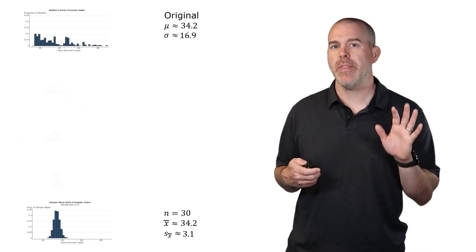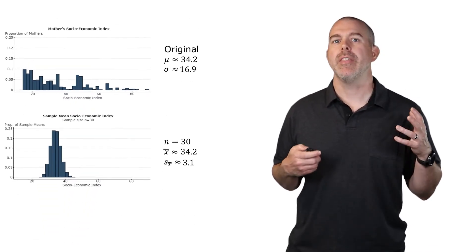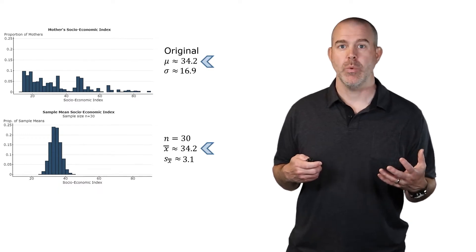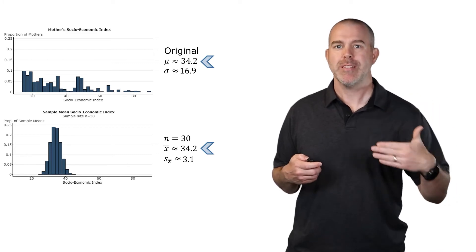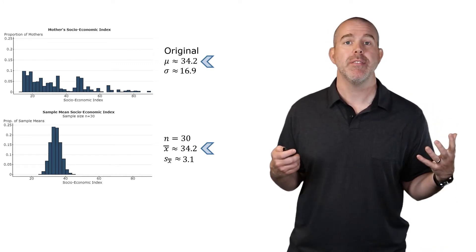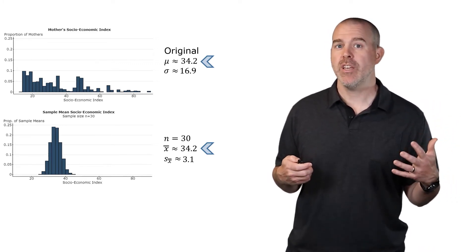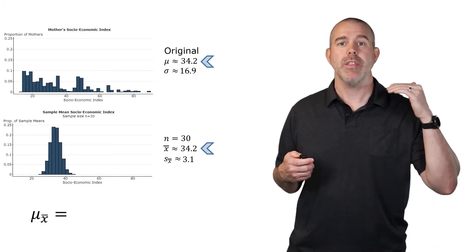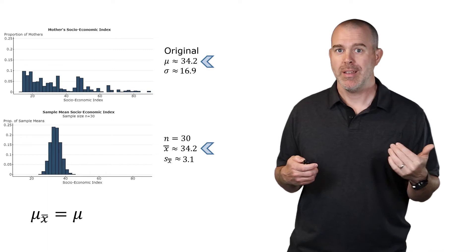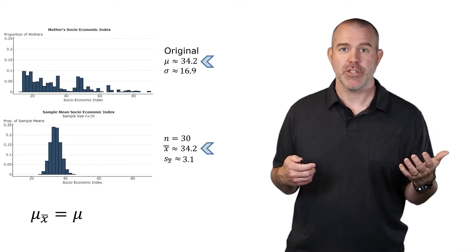Let's focus just on the original and then the sample of size 30. We did say the means are the same. That's going to be true. On average, your sample mean should be the same as the population mean, regardless of sample size. So notationally, we can say mu sub x bar, the mean of all the sample means, will be the same as the population mean.